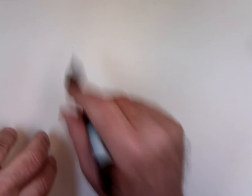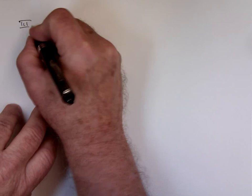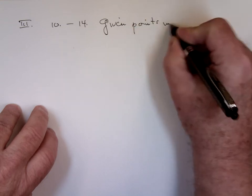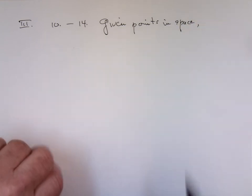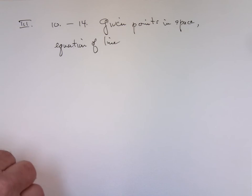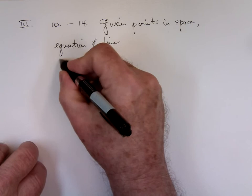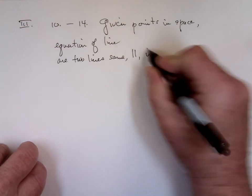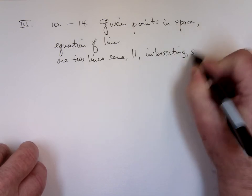10 through 15, third section. I'm going to be giving you some points in space. I'll be giving you some points, a few of them. I want you to be able to find the equation of the line through two of them. I want you to be able to tell me how two lines are related. The same parallel intersecting skew. Those are the four possibilities.